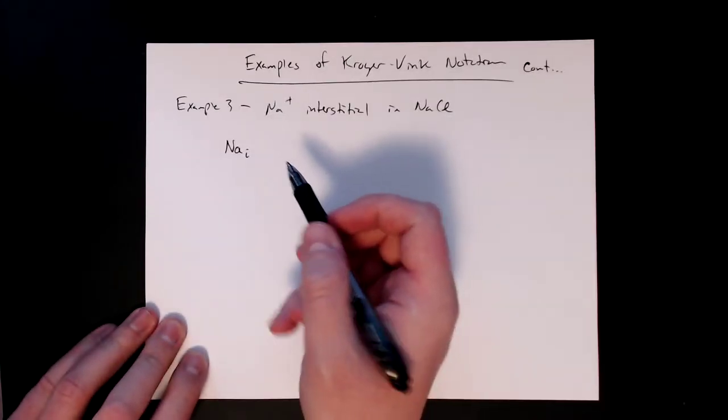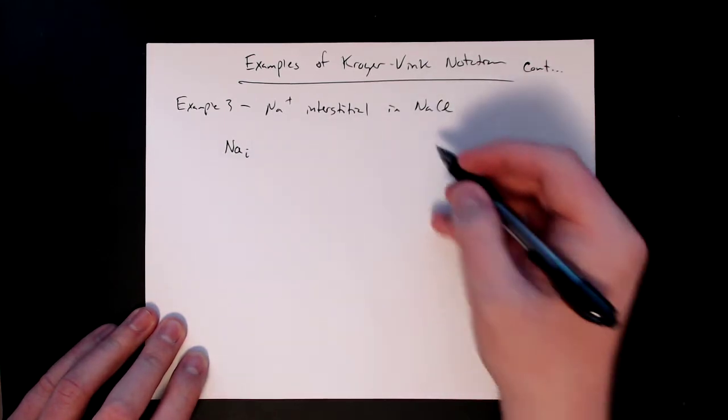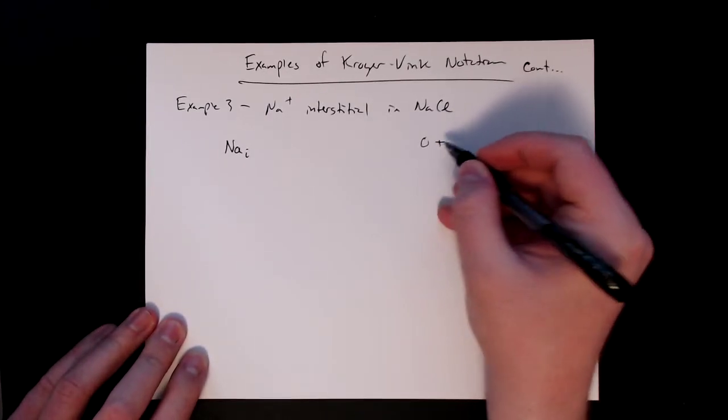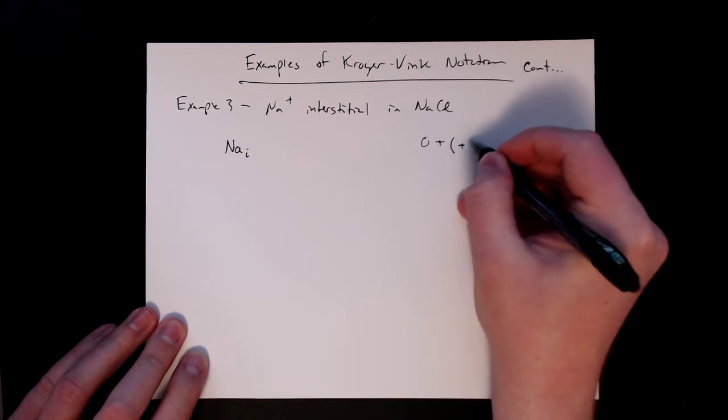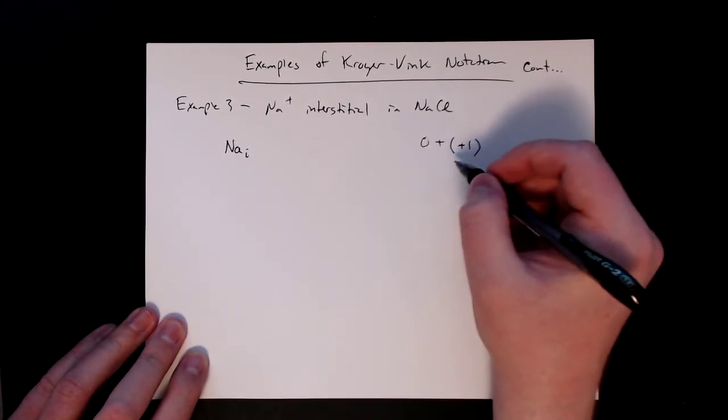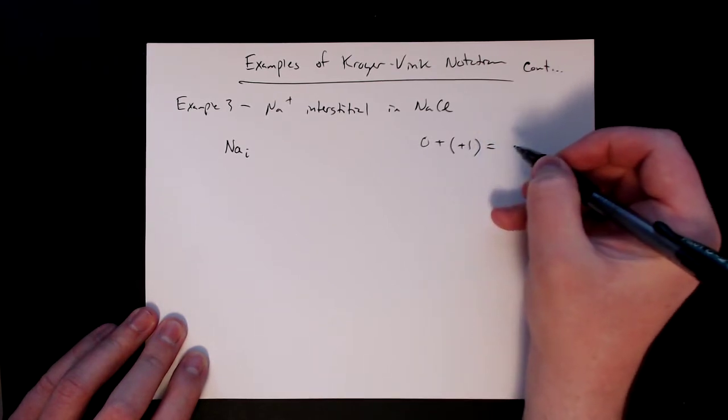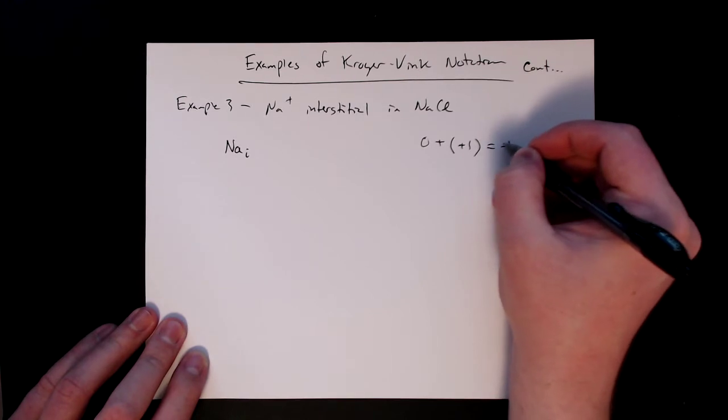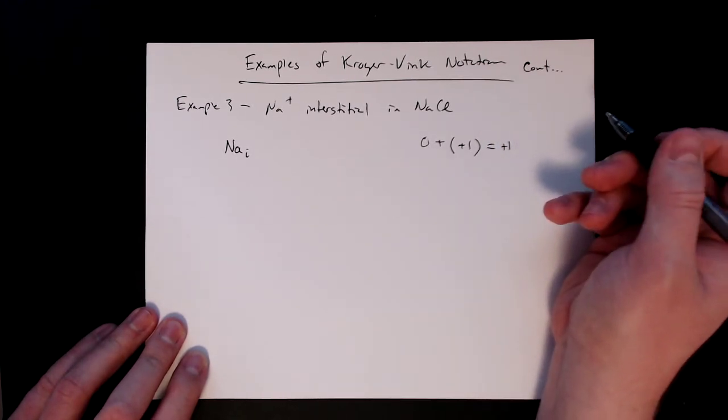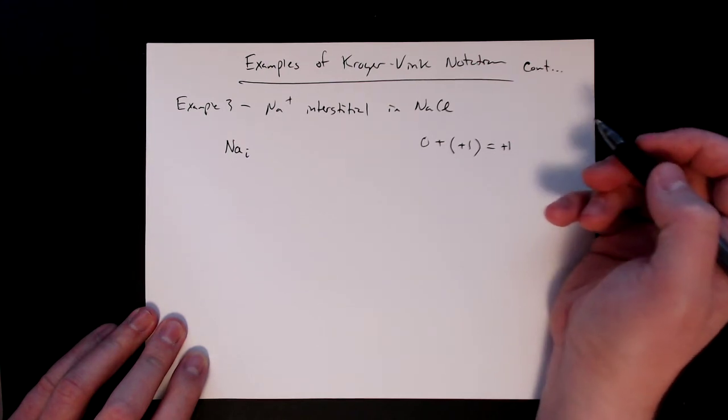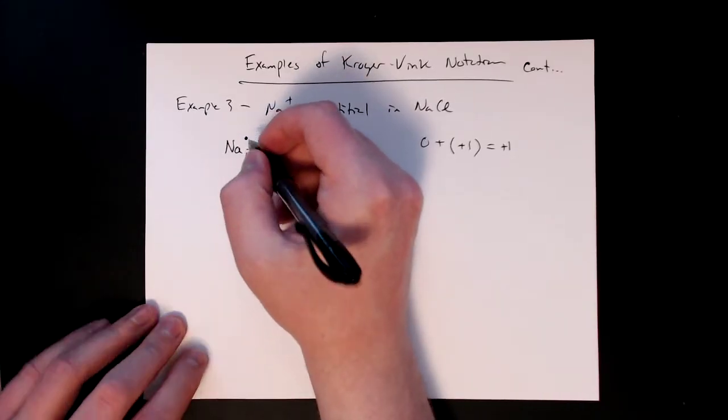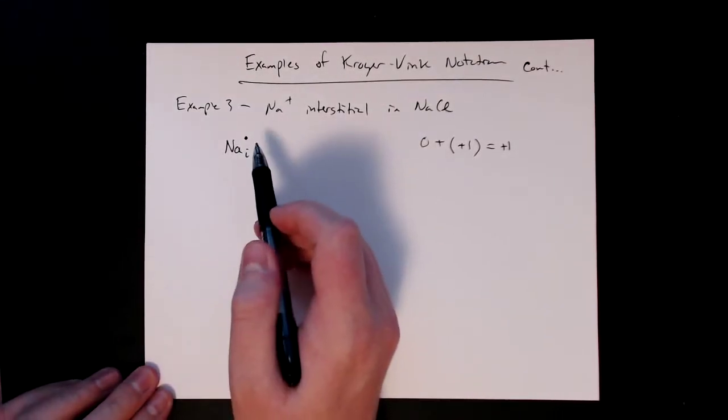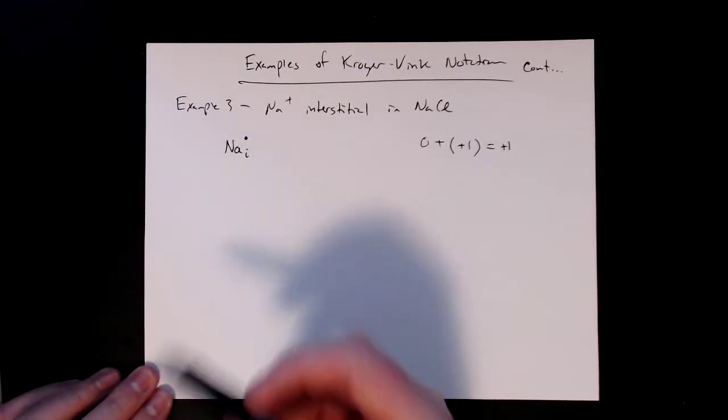And then the superscript, again, is the charge. So I like to keep track of the charge over here. So zero for a perfect crystal, and then interstitial, we're adding something now, and we're adding a plus one charge. So even though it's really quick, easy math, I just like to keep track of it, and that way I don't mess up the charge either. So this is a plus one charge, represented by the dot. So a dot for plus one. If it was multiple, we would put multiple dots to represent plus two or plus four or plus three.